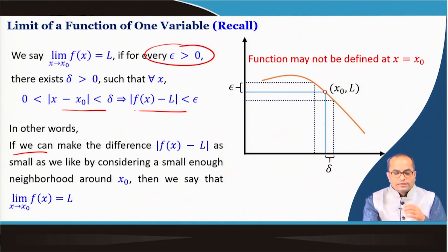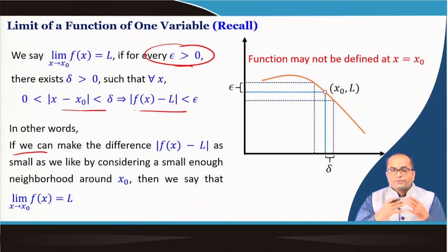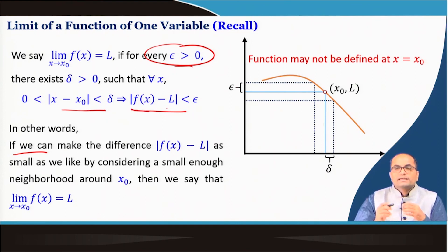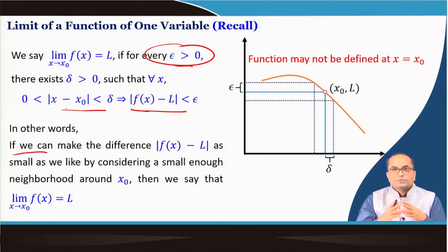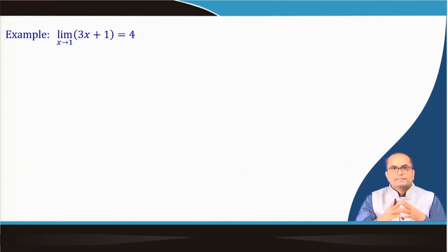Then we say that the limit as x → x₀ of f(x) equals L. Naturally our interest is when epsilon is very very small — whether for however small an epsilon we can find this delta-neighborhood such that |f(x) − L| < epsilon for any point we pick in the delta-neighborhood.